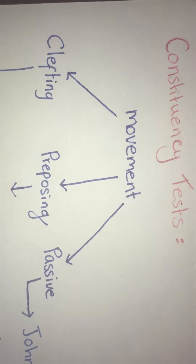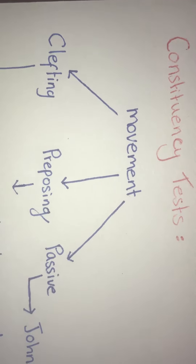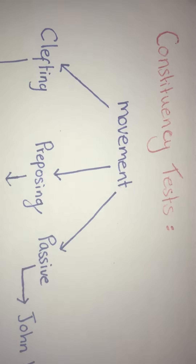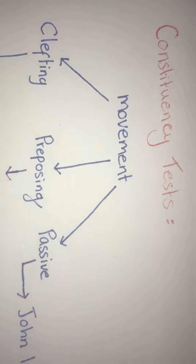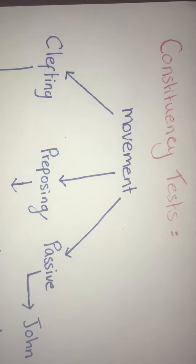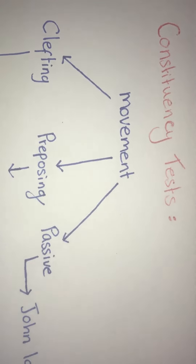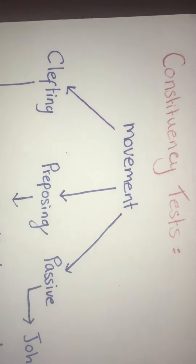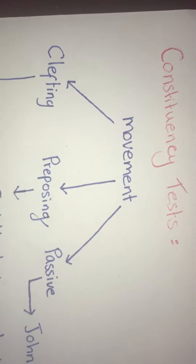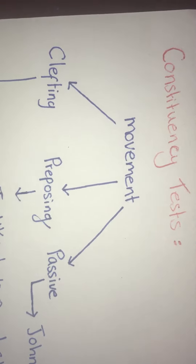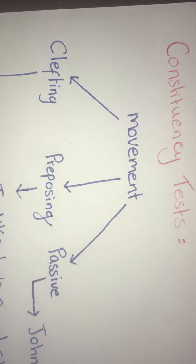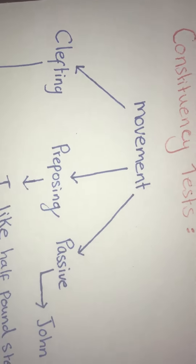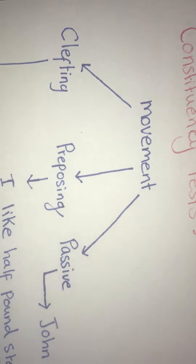Hello, everyone. In the book, we talked about four constituency tests, and I will talk about one of them, which is movement. Movement has several tests, but I will talk about three, which are passive, preposing, and clefting.